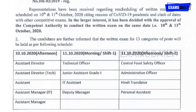Applied candidates should continue their preparation with effort to achieve a good position in central government. For Assistant Director and Assistant Manager, the exam date is 10th October 2020 in the afternoon session. For Technical Officer, Junior Assistant Grade 1, IT Assistant, and Deputy Manager, it is 11th October morning shift. Central Food Safety Officer, Administrative Officer, Hindi Translator, and Personal Assistant have the afternoon session on 11th October 2020.